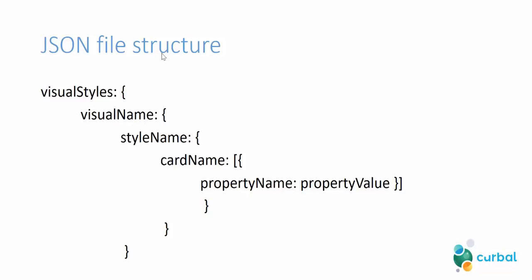The JSON file structure is as follows: you have visualStyles, and this is basically the container for the code — you don't have to change anything in here. Then you have visualName — here you have to change this with the name of the visual, like if it is a matrix, a line chart, a bar chart, or whatever it is. Then there is styleName — I've always used a star or asterisk; I'm not sure if I'm supposed to write anything else in there, so if anybody knows, let me know.